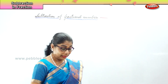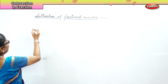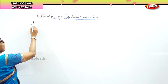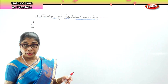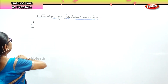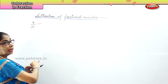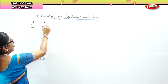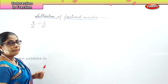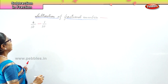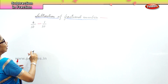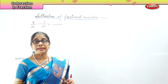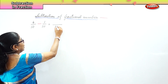Here I said, for example, if we have the same denominator, then the subtraction of fractional numbers is very easy. For example, 4 by 10 minus 1 by 10. Now in this case, all we need to do first is take the denominator and put it here.